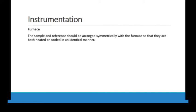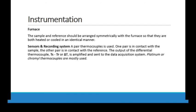The sample and reference should be arranged symmetrically within the furnace so that they are both heated and cooled in an identical manner. A pair of thermocouples is used — one pair in contact with the sample and the other in contact with the reference. The output of the differential thermocouple, which is TS minus TR (temperature of sample minus temperature of reference, or delta T), is amplified and sent to the data acquisition center. Platinum or chromium thermocouples are mostly used.